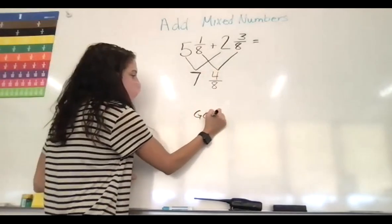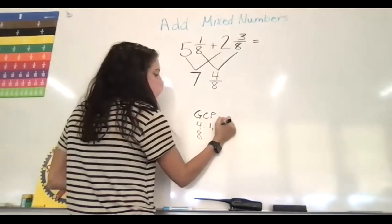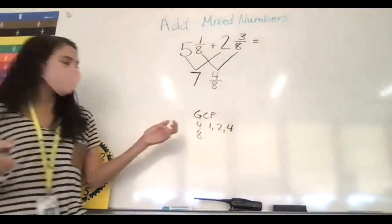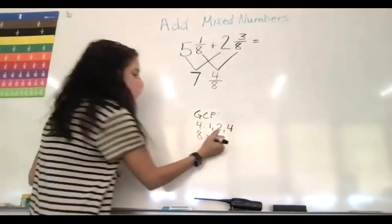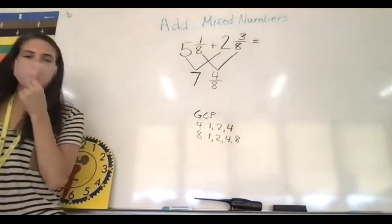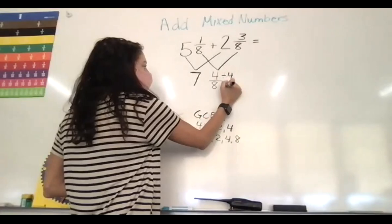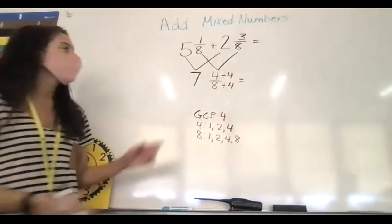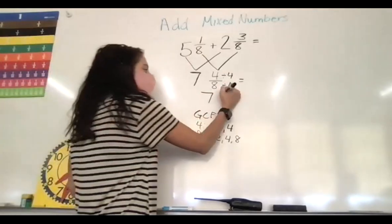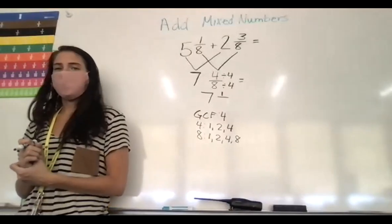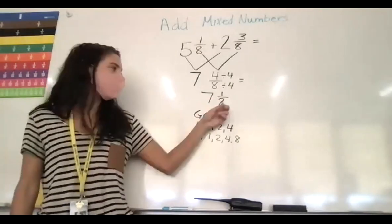I have to find the greatest common factor of 4 and 8. The factors of 4 are 1, 2, and 4; the factors of 8 are 1, 2, 4, and 8. So the greatest common factor is 4. Now I divide my numerator and denominator by 4. My whole number stays the same. What is 4 divided by 4? 1. What is 8 divided by 4? 2. So my answer is 7 and 1 half.